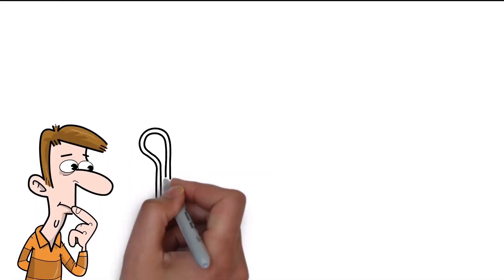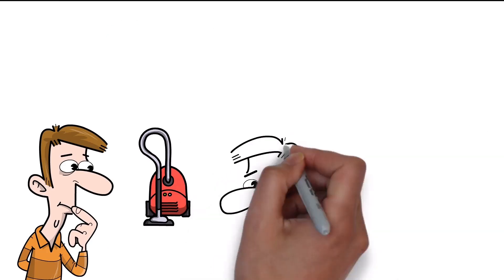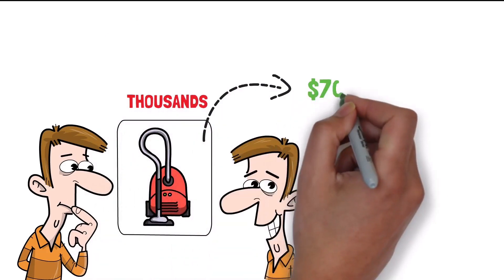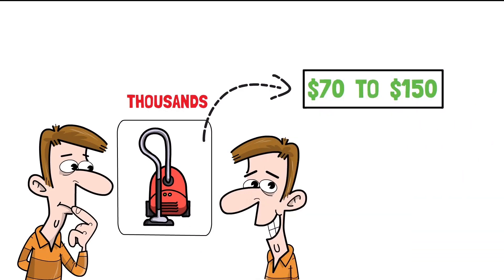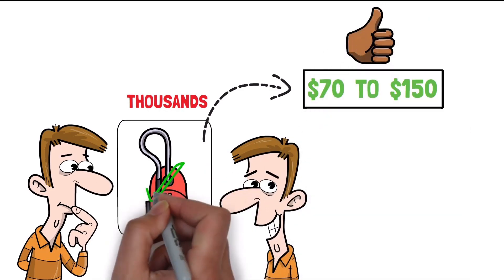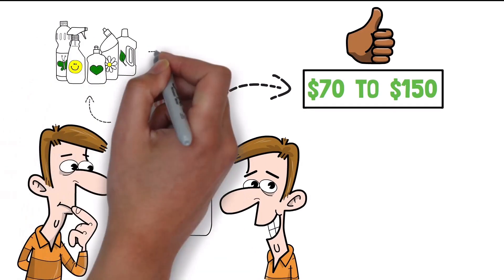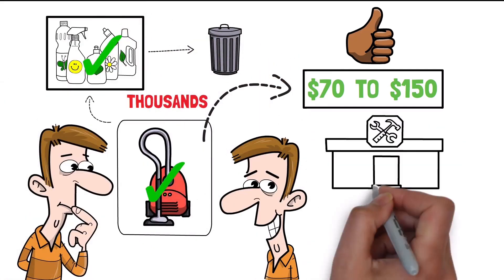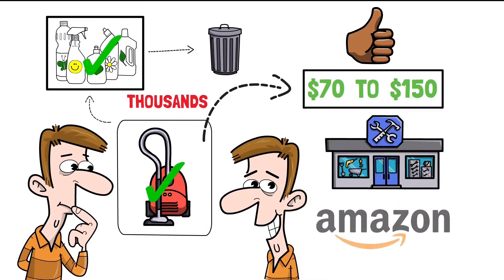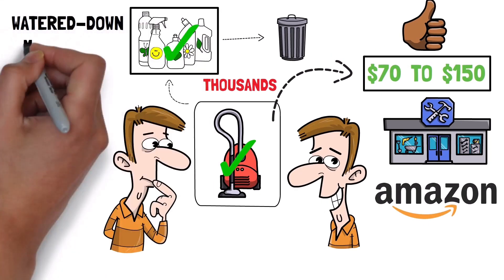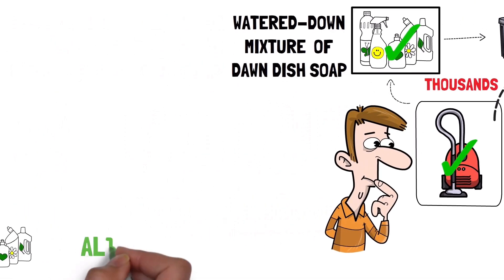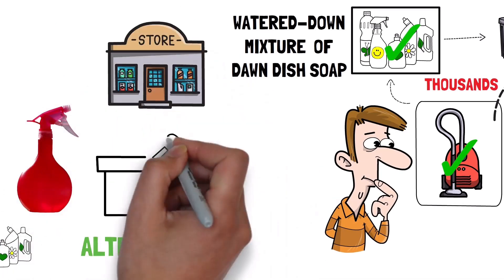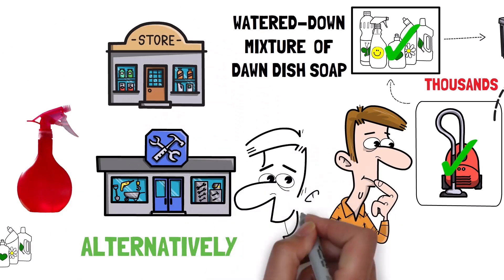The first thing that you'll need obviously is a pressure washer and the best part is you don't even need an expensive commercial pressure washer that'll cost you thousands. A simple $70 to $150 battery powered pressure washer will work perfectly fine. Now you'll want to be sure that you buy some type of pressure washer that has a soap attachment that allows you to spray soap onto the trash cans before you actually pressure wash them. In terms of your equipment, that's all you need to get started.